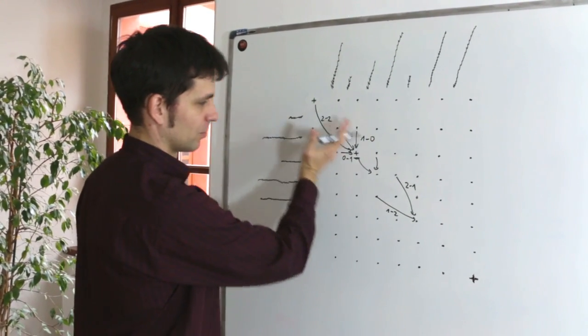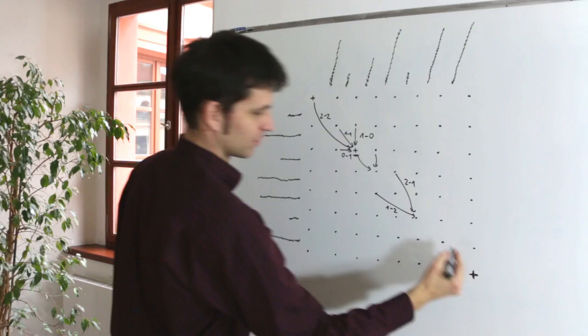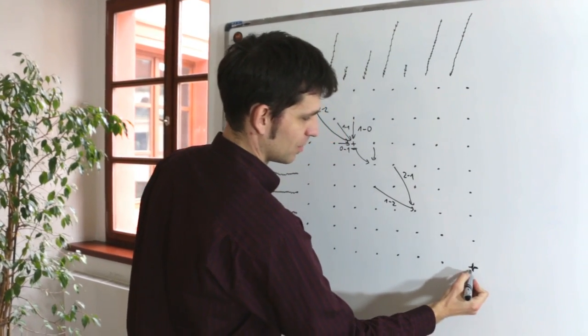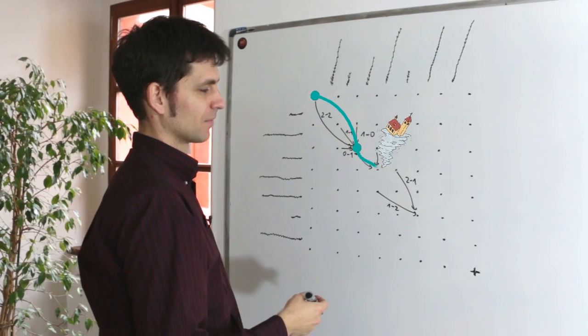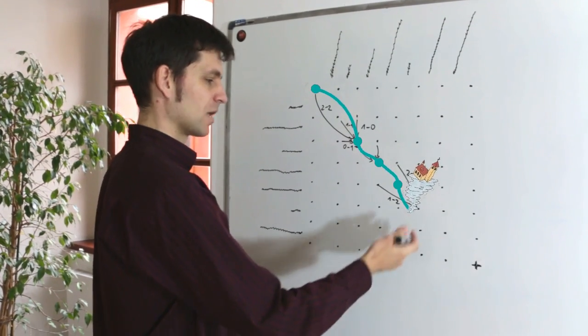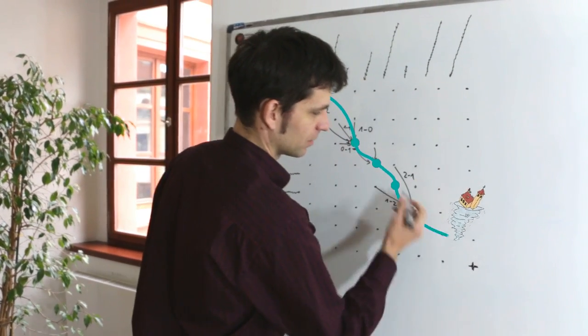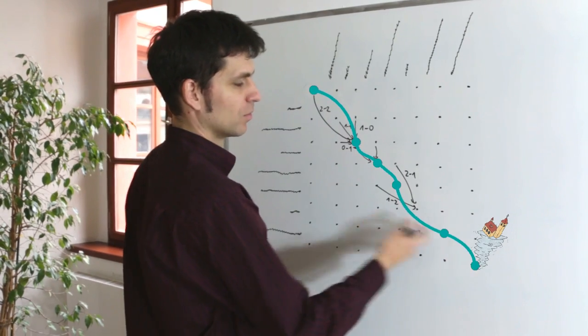We gradually fill the whole table and when we reach the final point we know what is the cheapest alignment price so to say. And to get the actual alignment we just traverse back and see how the minimum was reached.